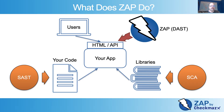Zap works differently. It is a DAST tool — a Dynamic Application Security Testing tool. And this actively attacks your application in the same way a malicious attacker might. So all of these tools have different perspectives. No one technique is better than the others, and if you care about the security of your applications, you should be using all of them.